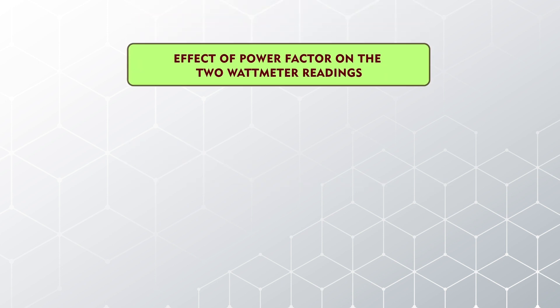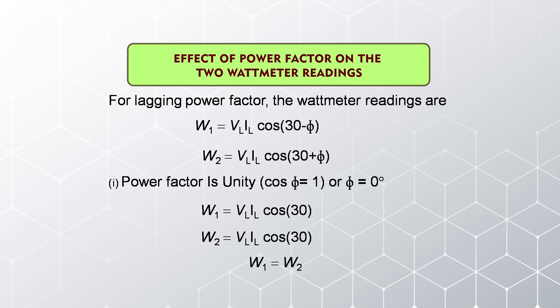Now we understand the effect of power factor on the 2-wattmeter readings. For a lagging power factor, W1 equals V_L·I_L·cos(30 minus φ) and W2 equals V_L·I_L·cos(30 plus φ). First condition: when the power factor is unity. Power factor unity means cosφ equals 1, which means φ equals 0, since cos0 equals 1. That means the angle between voltage and current is 0.